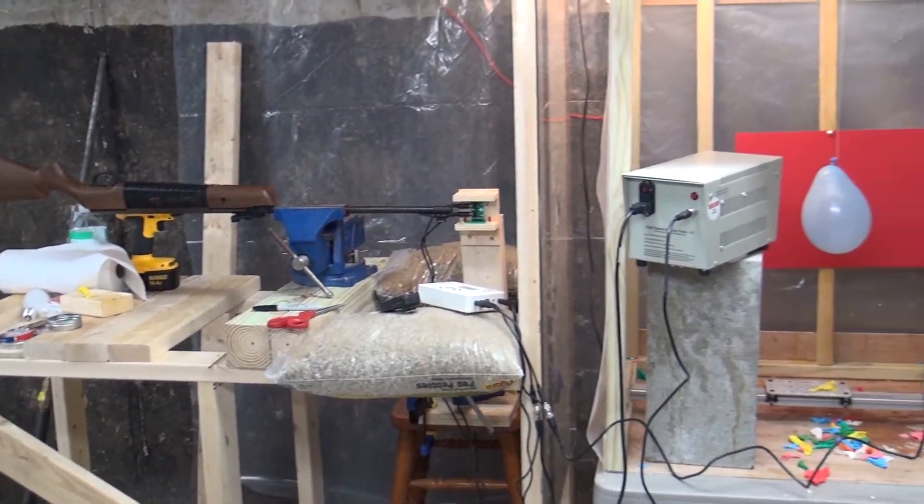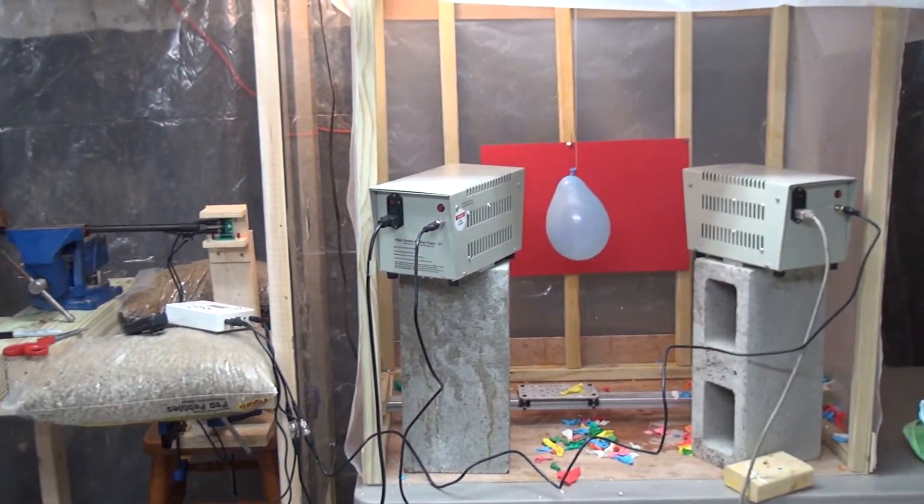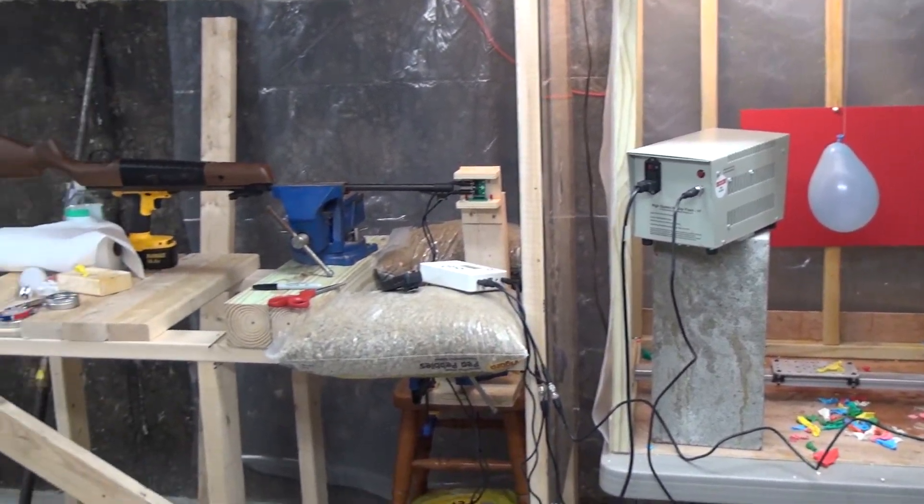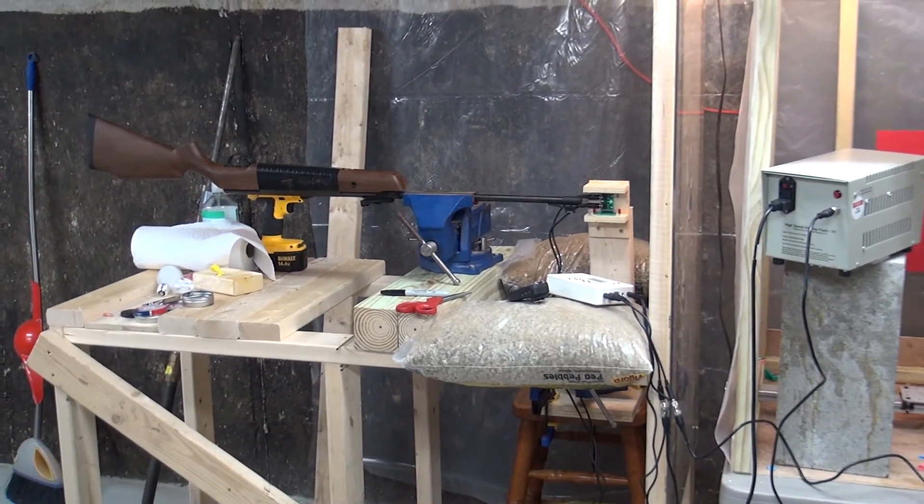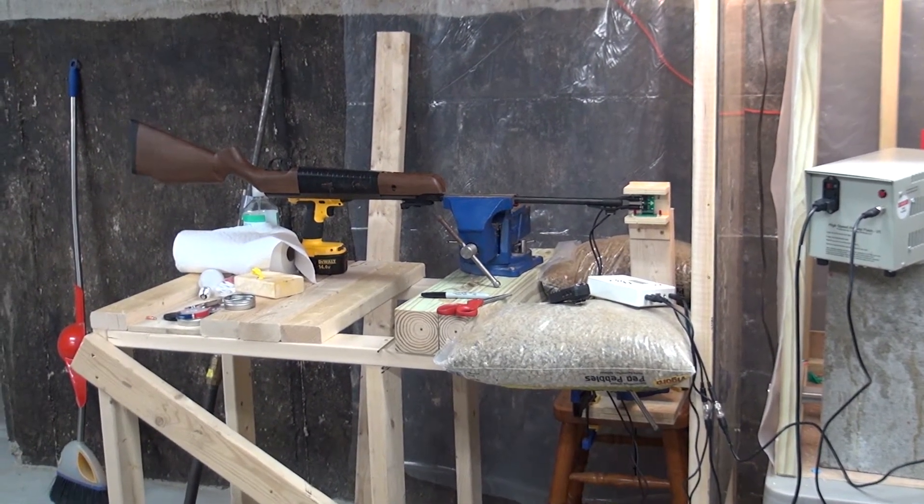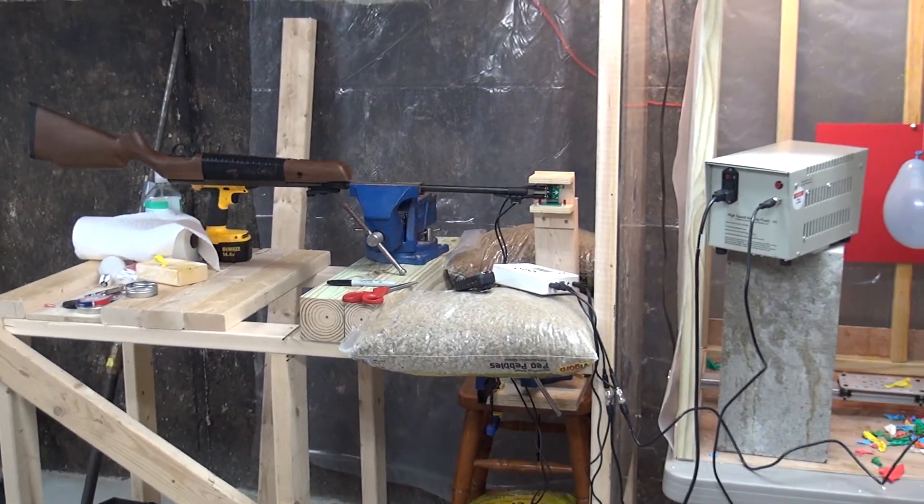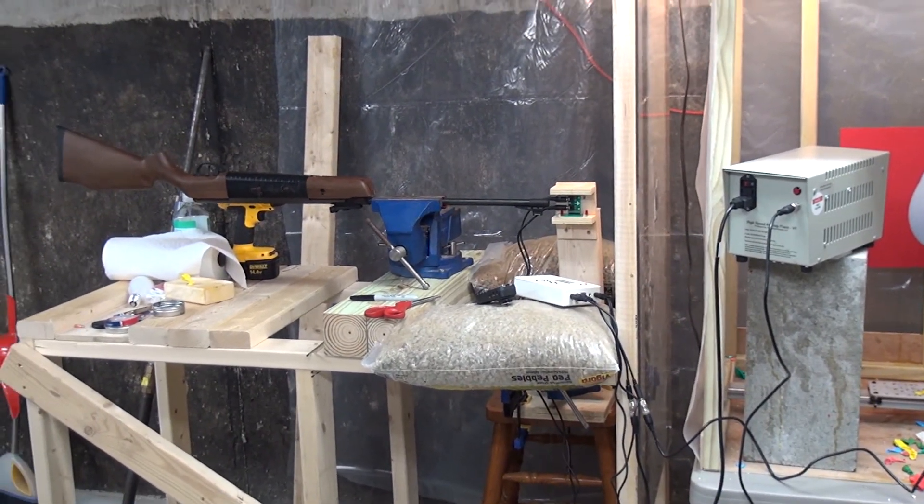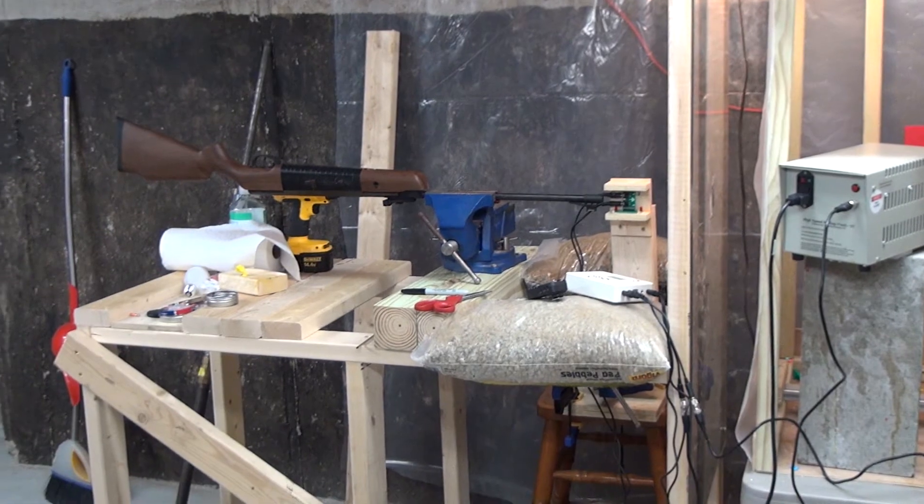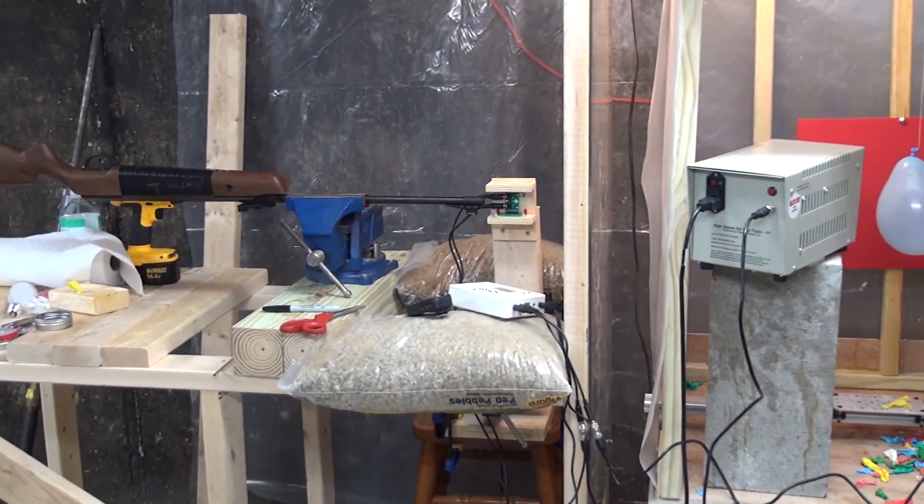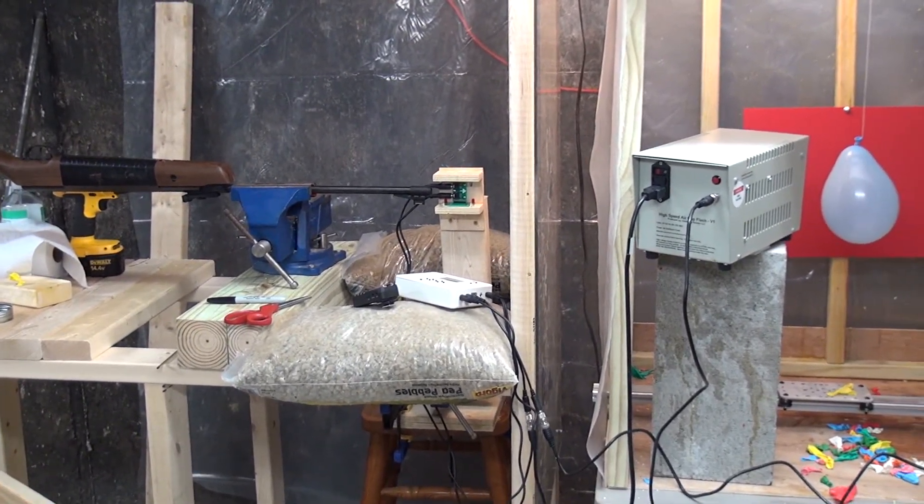This is the setup I'm using to photograph popping balloons. You'll notice that it's pretty similar to the setup I used last week with the projectile sensor and air gap flashes because I'm using pretty much the same setup. So I won't go into details about it in this episode. You can check out the last episode if you want.